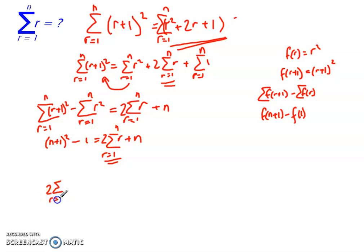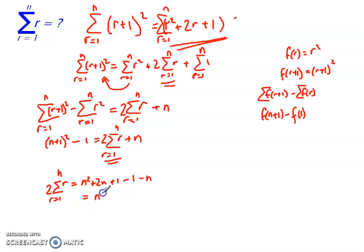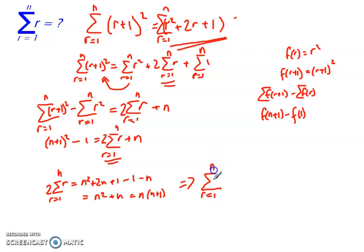Rearranging: 2 times the sum from r equals 1 to n of r equals (n+1)² minus 1 minus n. Expanding gives n² + 2n + 1 − 1 − n, which simplifies to n² + n, and factorizes to n(n+1). Dividing both sides by 2, we get the sum from r equals 1 to n of r equals ½n(n+1). That is the identity we can use for the sum of r.